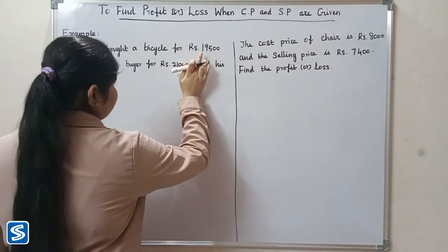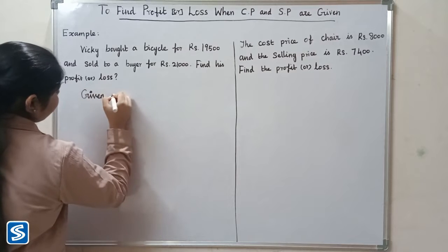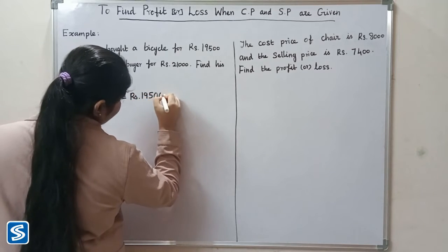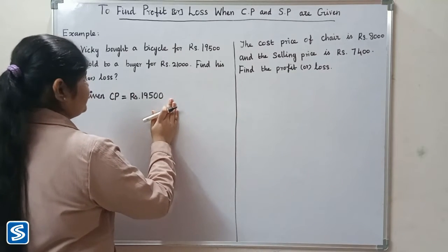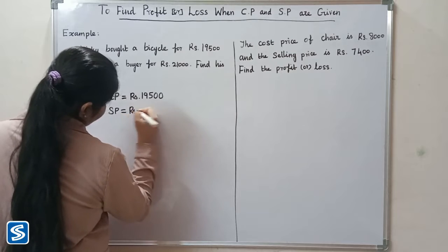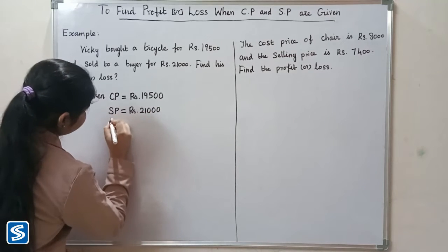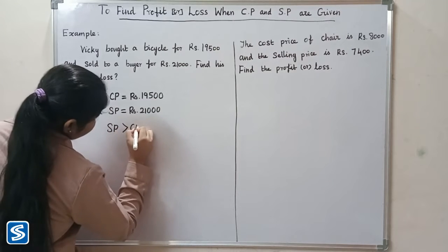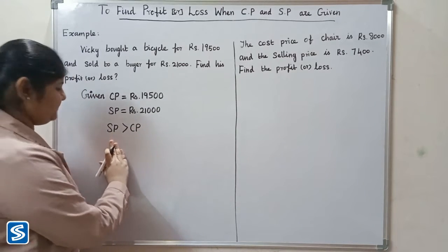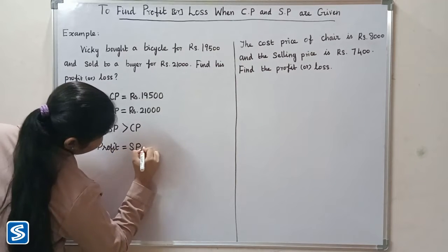Here the given cost price is rupees 19,500 and the selling price is rupees 21,000. Since selling price is greater than cost price, Vicky has a profit. Now let us find the profit. We already know that profit is equal to selling price minus cost price.